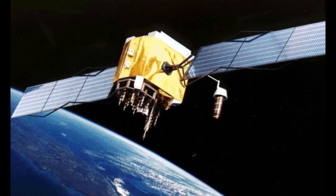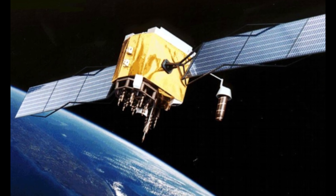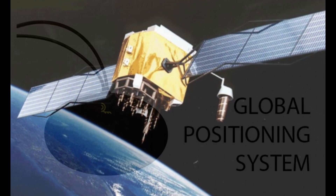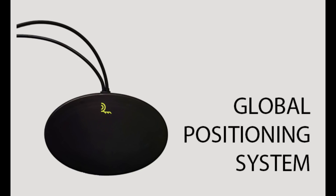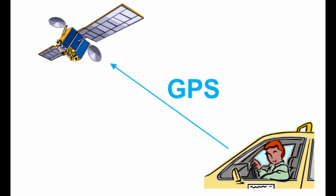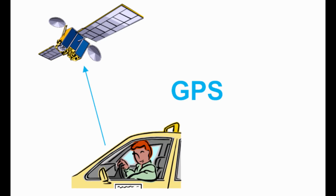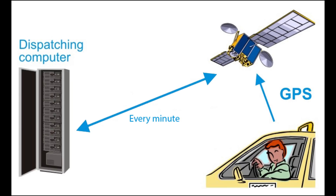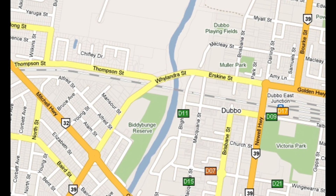Smartmove uses the latest technology to track vehicles and allocate work. Your car is fitted with a GPS — a global positioning system antenna — which picks up signals from GPS satellites used to calculate your car's position. The Smartmove unit sends your position to the dispatching computer at least once every minute so the system knows where every car is.